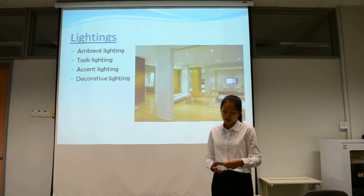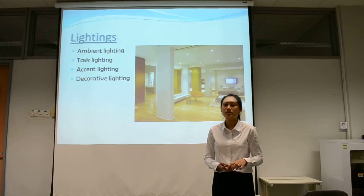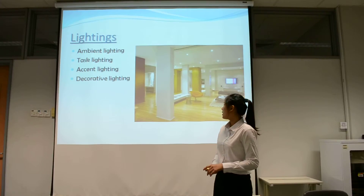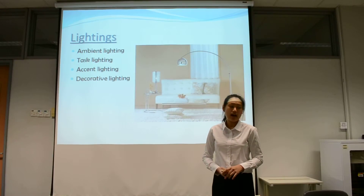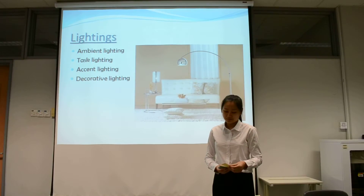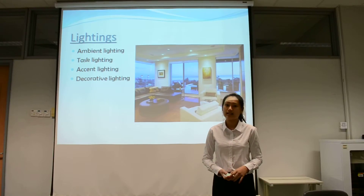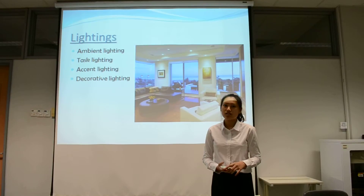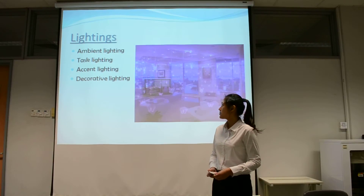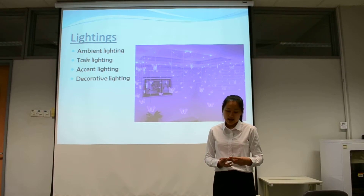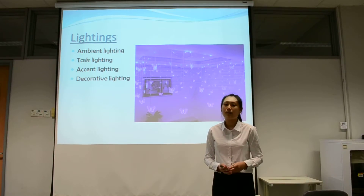Task lighting illuminates a specific function and is usually placed beside seats — for example, the floor lamp and the table lamp. Accent lighting draws attention to artwork, sculptures, and plants. Decorative lighting is a design element; it is made not to give off much light but to add a decorative touch to the room.